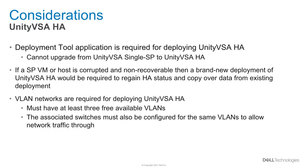Likewise, you cannot upgrade from a 2 virtual CPU to a 12 virtual CPU Unity VSA. Another consideration is that if an SP VM or associated host is corrupted and not recoverable, then a brand new deployment of a Unity VSA HA would be required to regain HA status. You would have to copy data from the existing deployment to the new deployment in that scenario.